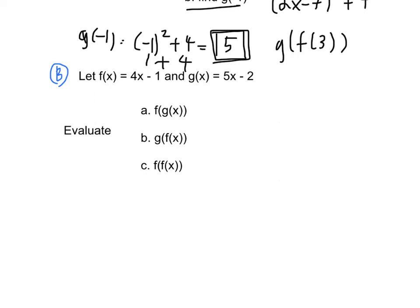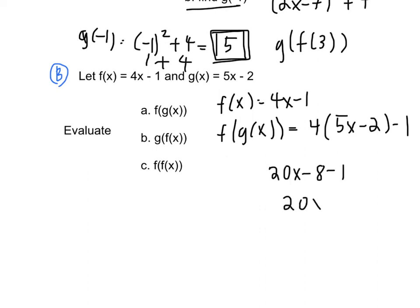So this is similar to our previous problem, except we're keeping x as our variable and not substituting a constant. So f of g of x. So normally f of x is simply 4x minus 1. But we want f of g of x. So we're going to plug in the entire g of x equation for wherever there's an x in our f of x equation. So 4, 5x minus 2, minus 1. 20x minus 8, minus 1, 20x minus 7.